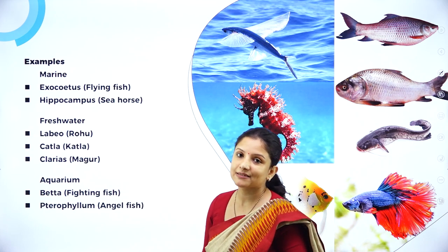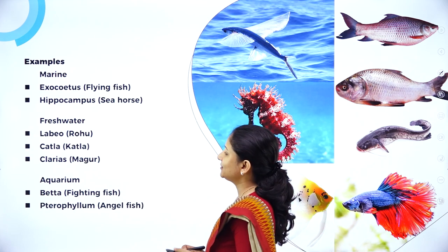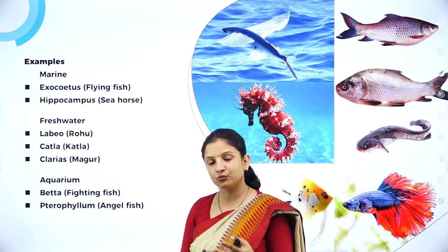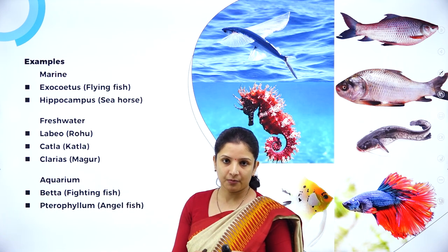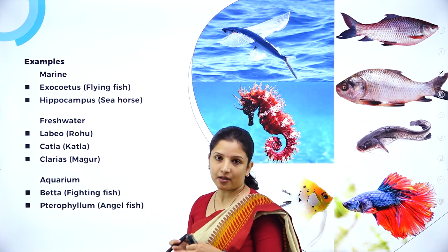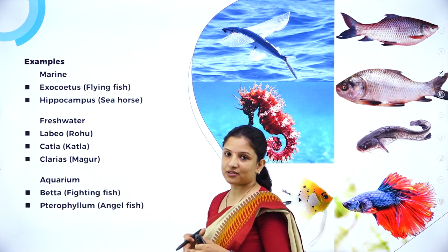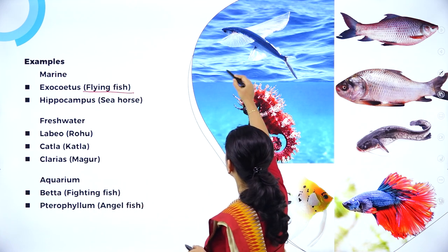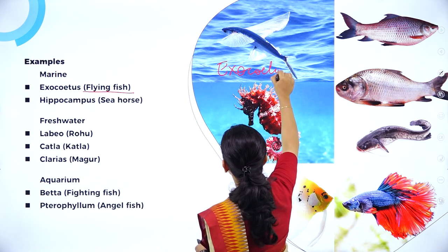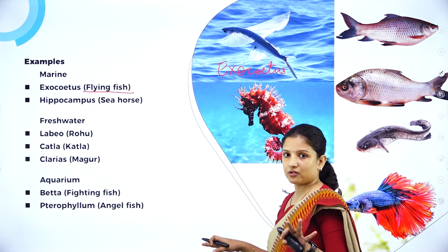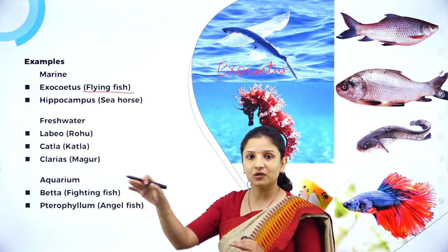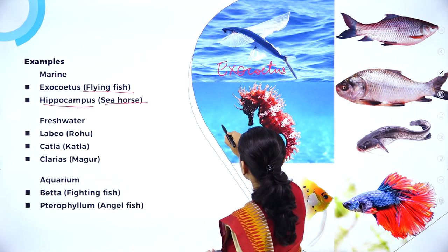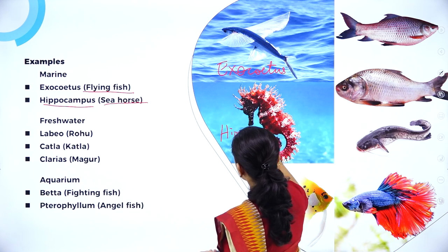Let's look at some examples under class Osteichthyes. There are different marine fishes, freshwater fishes, and fishes kept for ornamental or aquarium purposes. Under marine fishes, there is Exocoetus, which is the flying fish. You can see how it can spread its fins just like wings, allowing it to fly a short distance above the water — hence the name flying fish. Next is Hippocampus, which is the seahorse, so named because it looks like a horse.